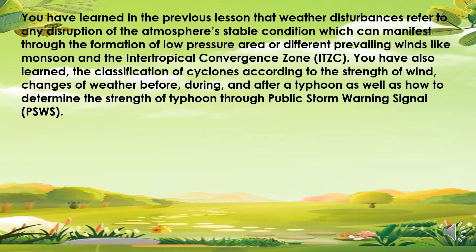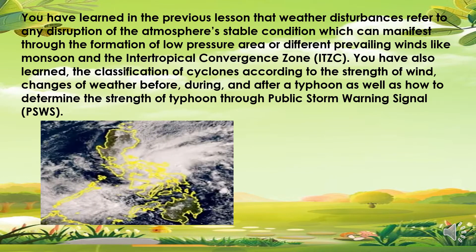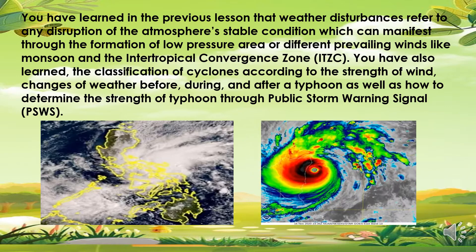You have learned in the previous lesson that weather disturbances refer to any disruption of the atmosphere's stable condition, which can manifest through the formation of low-pressure area, different prevailing winds like monsoon, and the Intertropical Convergence Zone or ITCZ. You have also learned the classification of cyclones according to the strength of wind, changes of weather before, during, and after a typhoon, as well as how to determine the strength of a typhoon through Public Storm Warning Signal or PSWS.